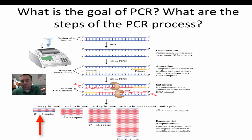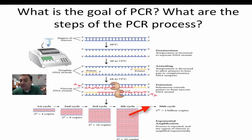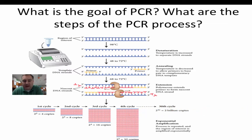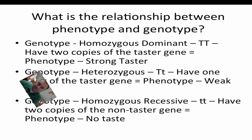In one experiment going through 30 cycles, out of one piece of DNA you made 2 billion copies of it. Within a short couple of hours, you can have billions and billions of copies of DNA — you just have more material to work with.